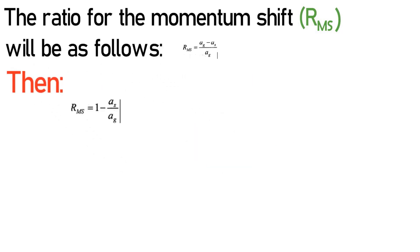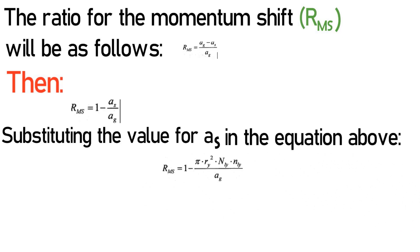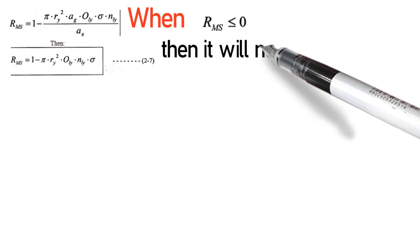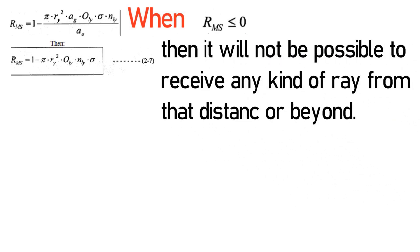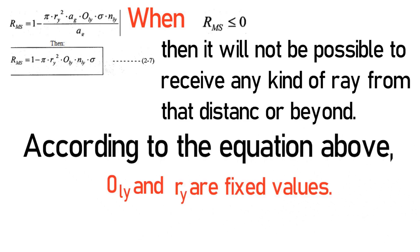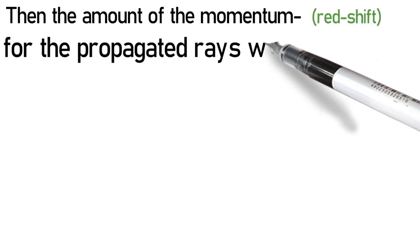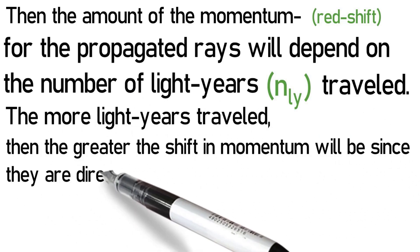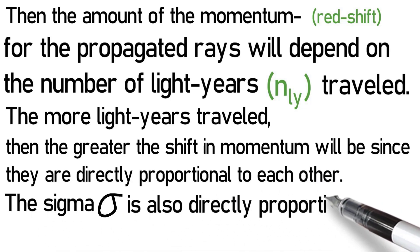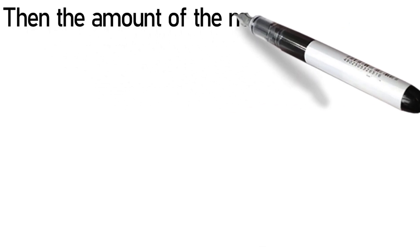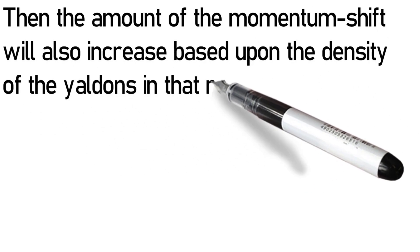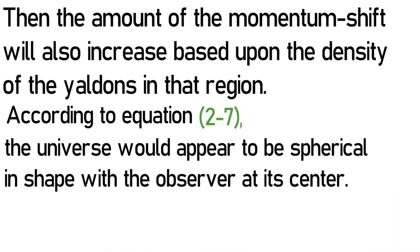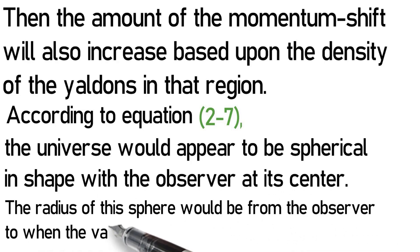Following will be a rough diagram with some formulas demonstrating this concept. Finding the number of Yaldins that will come into contact with the propagated group for a distance of one lightyear: let the number of lightyears that the propagated group travels be defined, and AS be the cross-sectional area for all Yaldins that come into contact with the propagated group during its travel through space. After substituting the values for AS and NLY in the equation above, when RMS approaches 1, it will not be possible to receive any kind of ray from that distance or beyond. The amount of momentum shift for propagated rays depends on the number of lightyears traveled, and sigma is also directly proportional to the ratio of the shift in momentum. According to equation 2.7, the universe would appear to be spherical in shape with the observer at its center, the radius being from the observer to where the value of RMS approaches 0.